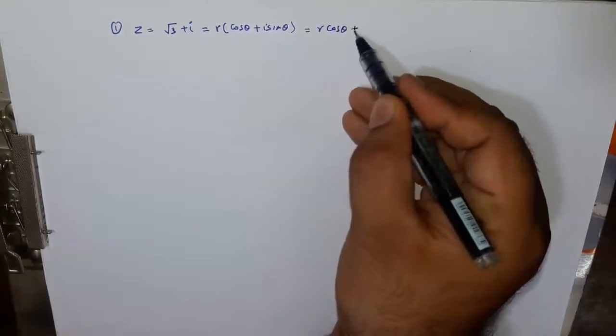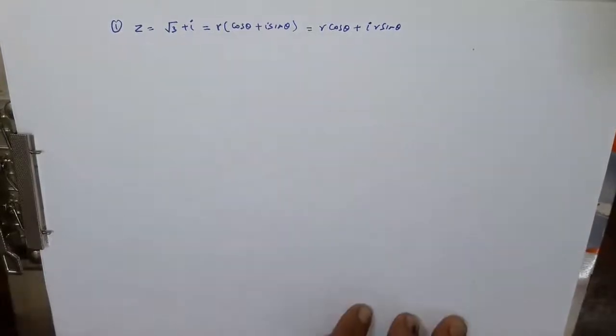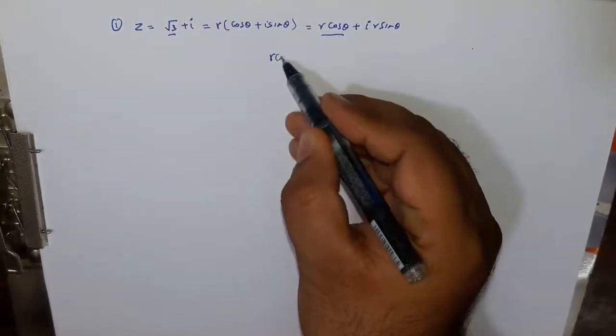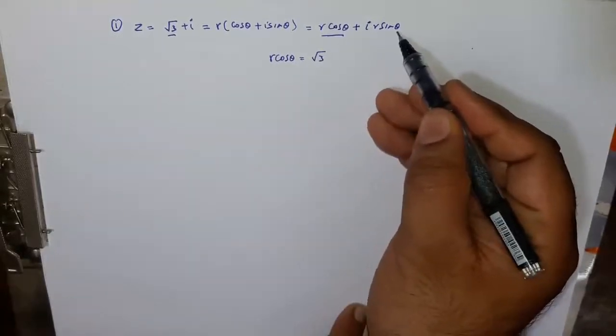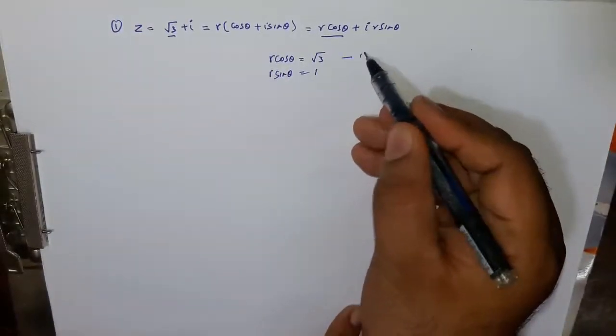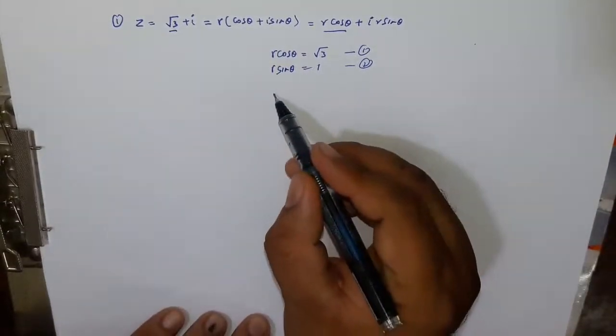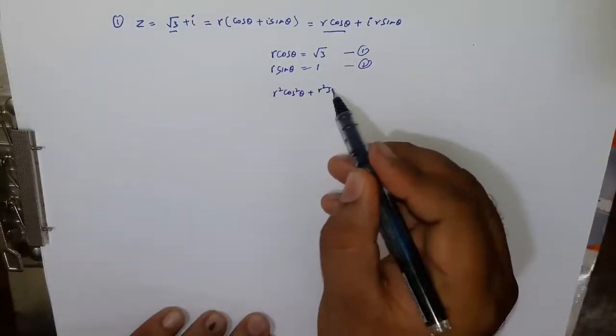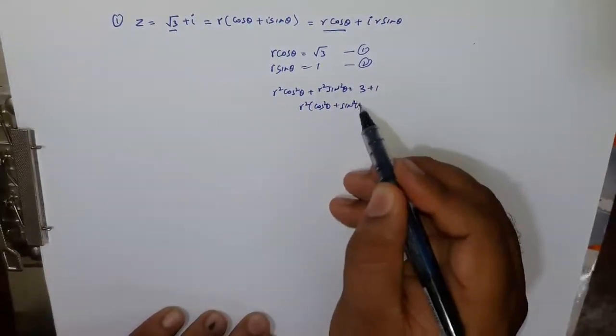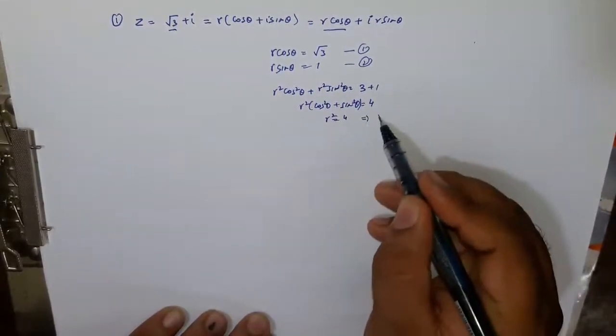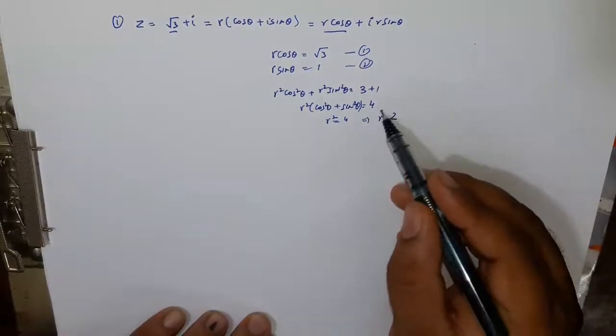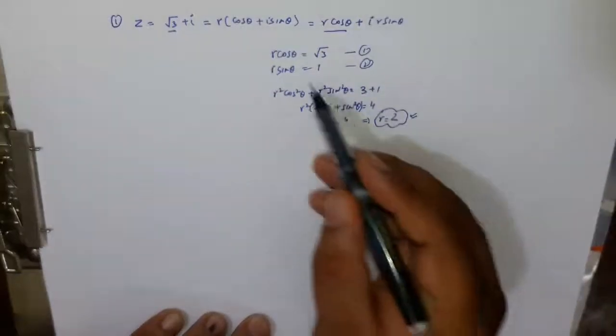Agar mein isko open karunga toh ye hai r cos theta plus iota r sin theta and we know that on comparing real and imaginary parts we will get two equations. So we have r cos theta equal to root 3 and r sin theta equal to 1. On squaring and adding both the equations we have r square cos square theta plus sin square theta equal to 4. So r square equals 4 and r equals plus minus 2, but r represents the length and r is the distance of that point from the origin and distance cannot be negative, so r will always have positive value.